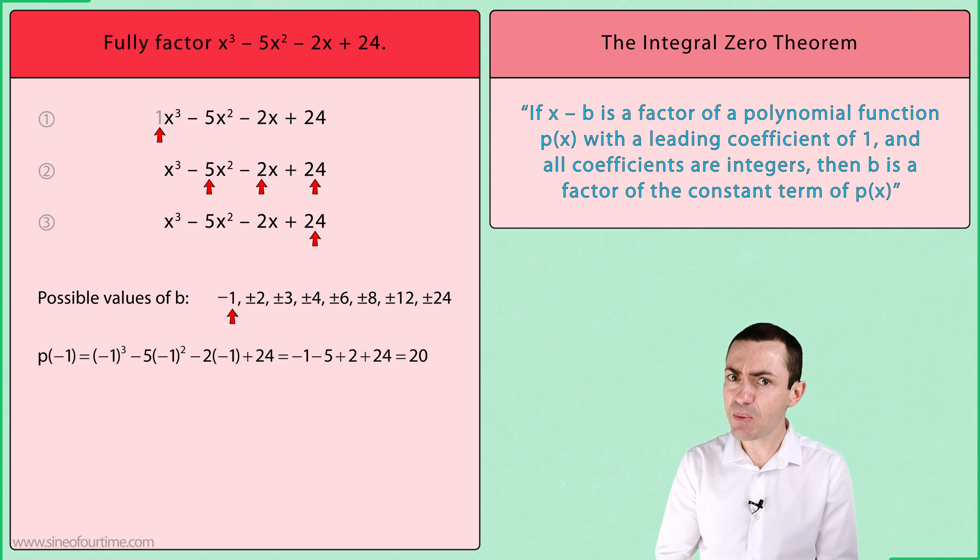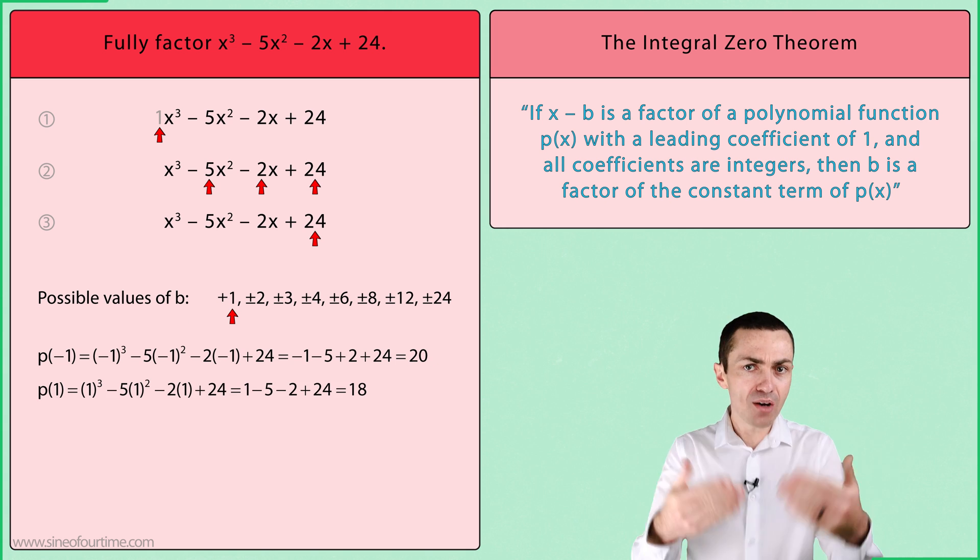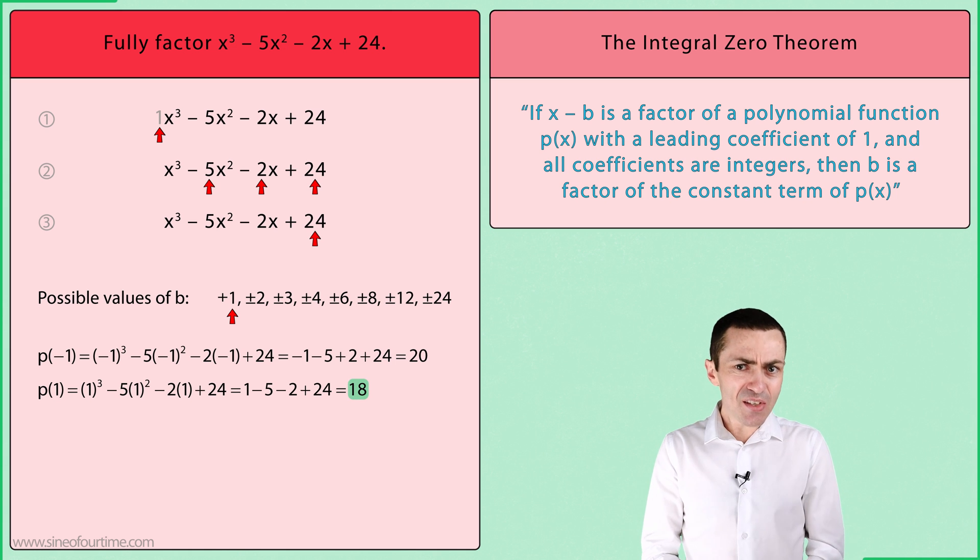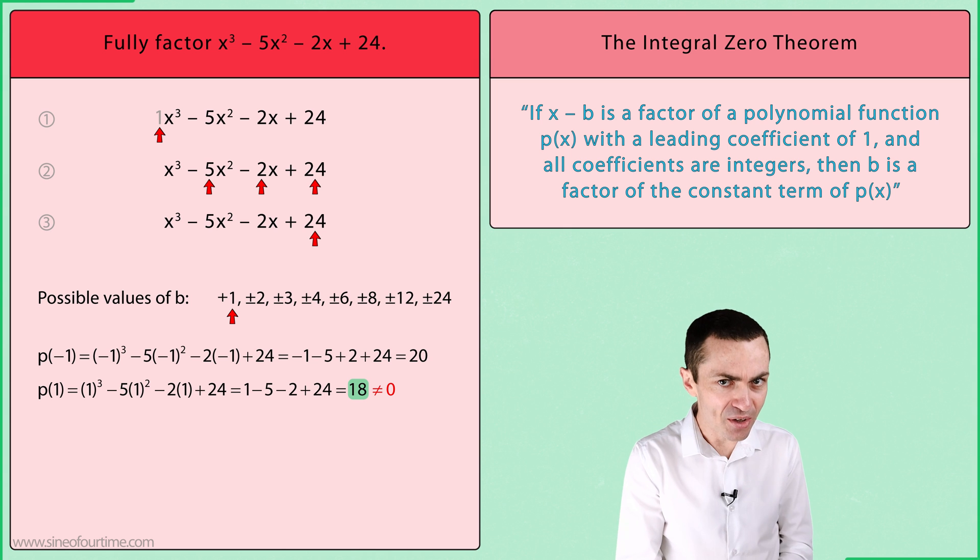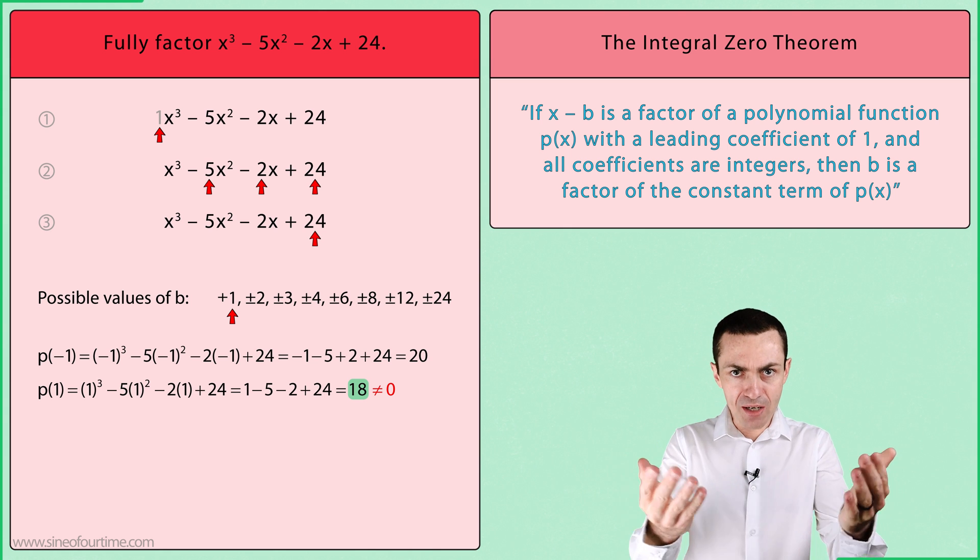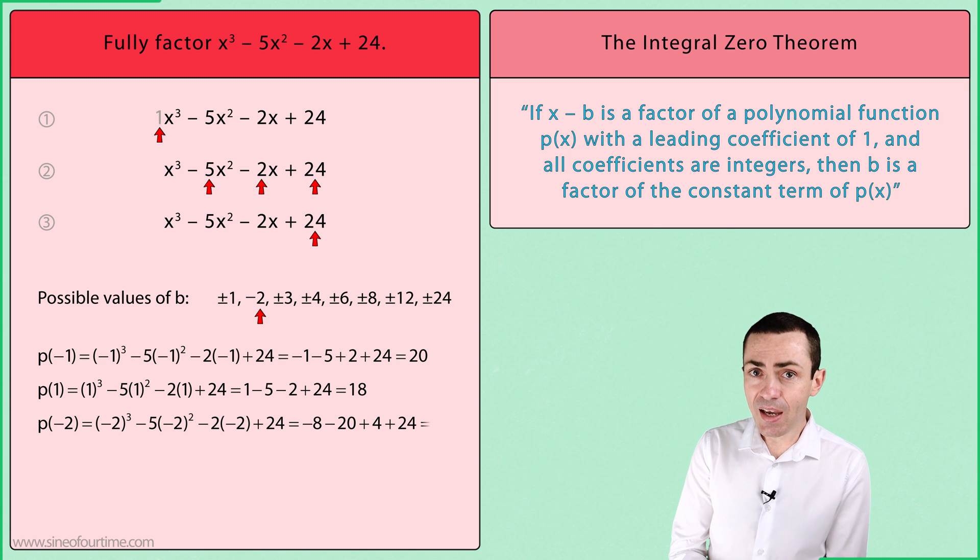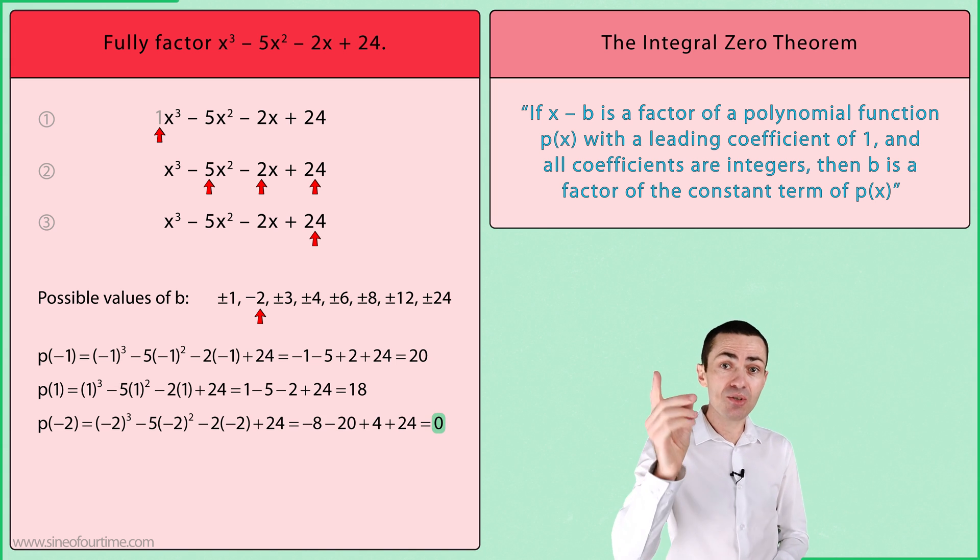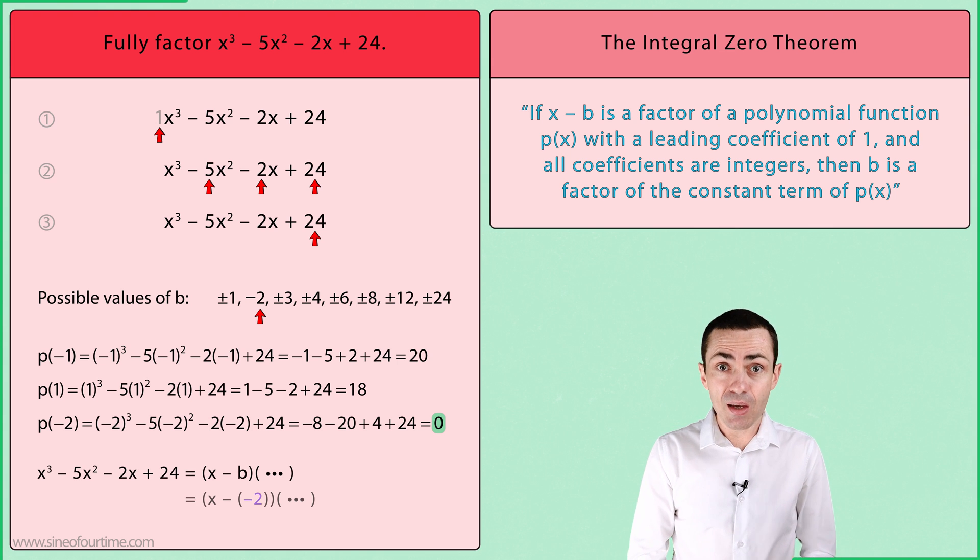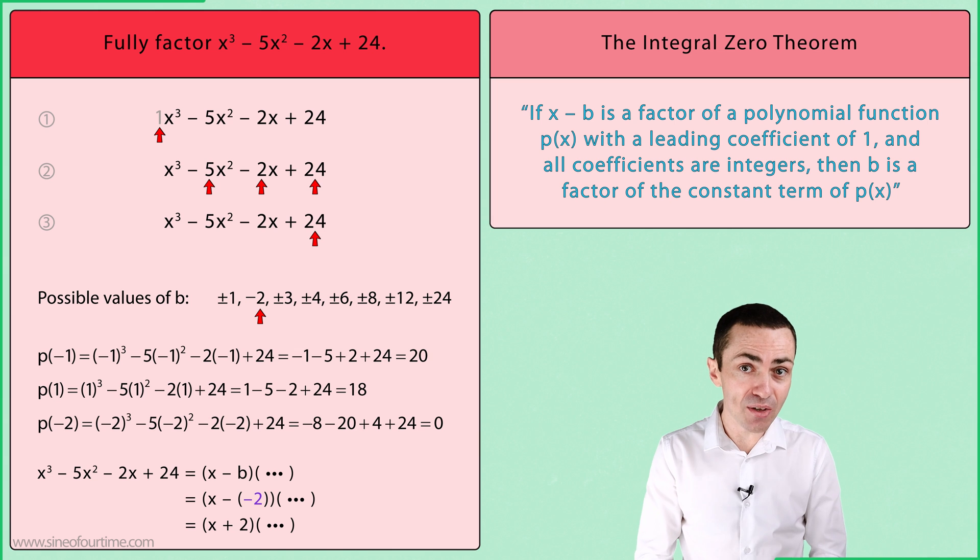Next, let's test positive 1, which gives us a value of 18. Since this is not equal to 0, we can conclude that positive 1 is not a value of b. So let's move on. We'll test -2, and this does give us a value of 0, which means that -2 is a value of b. When simplified, it tells us that x + 2 is a factor of this polynomial.